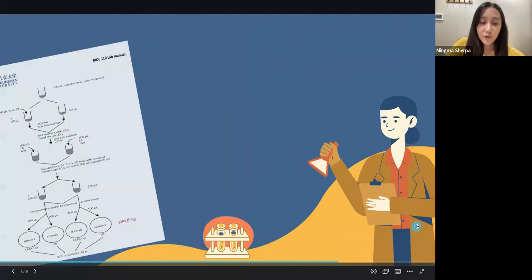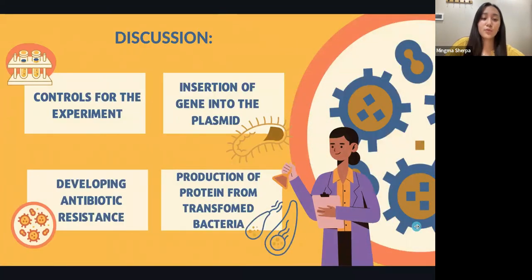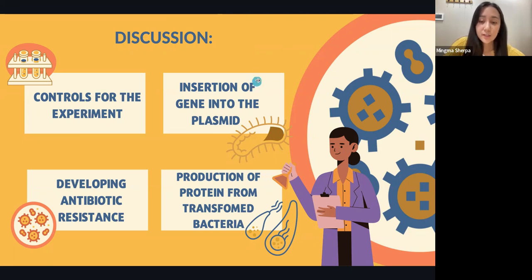At the end of our experiment, we had some important discussion points. First, in this experiment we had three control groups checking for the survival of bacterial cells with any one of the provided criteria missing — either no ampicillin control group, no plasmid control group, or no ampicillin and plasmid control group. The group with both ampicillin and plasmid was the only non-control group. Second, regarding insertion of a gene into the plasmid: we should insert the gene into the multiple cloning site because that region contains binding sites for many restriction enzymes, so different enzymes can cut that segment and insert the gene of interest at that location.